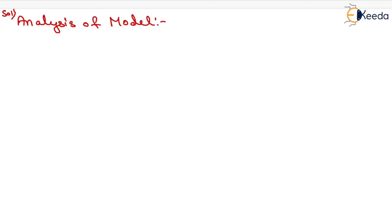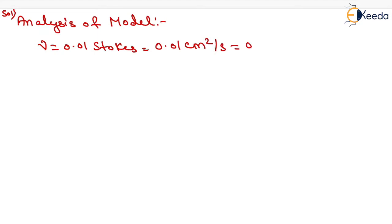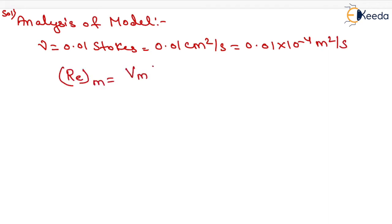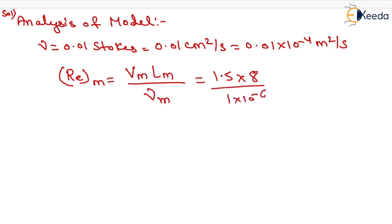Now first is the analysis of the model. Kinematic viscosity nu equals 0.01 stokes, or 0.01 centimeter square per second, which equals 0.01 into 10 to the power minus 4 meter square per second. Reynolds number for model equals velocity of model into length of model upon kinematic viscosity of model, which gives 1.5 into 8 upon 1 into 10 to the power minus 6, equaling 12 into 10 to the power 6.